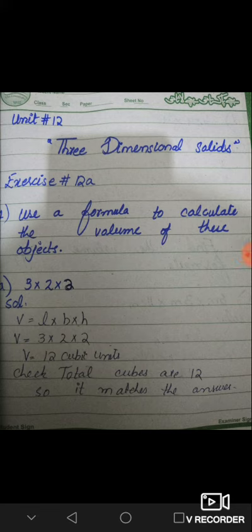3 multiplied by 2 multiplied by 2. V equals L, length multiplied by breadth multiplied by height. We have the values, put them in the formula according to the formula. 3 multiplied by 2 multiplied by 2 equals 12 cubic units. Check: total cubes are 12. So it matches the answer.